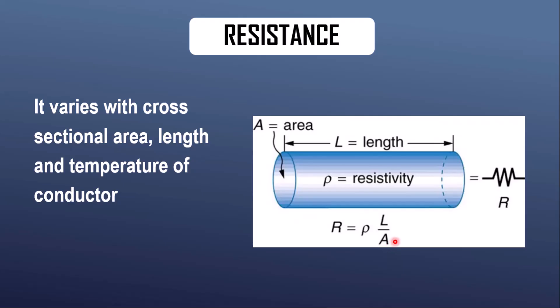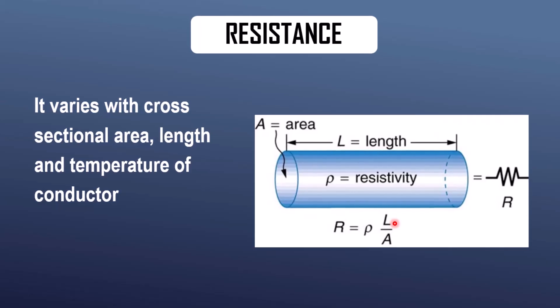So if the cross-sectional area of the conductor reduces, the resistance increases. Similarly, if the length of the conductor increases, the resistance increases.